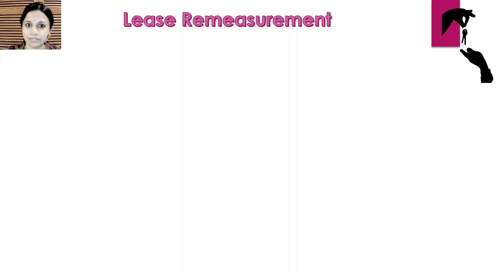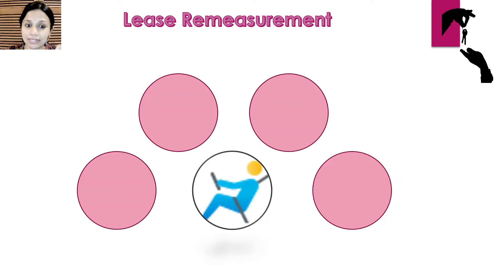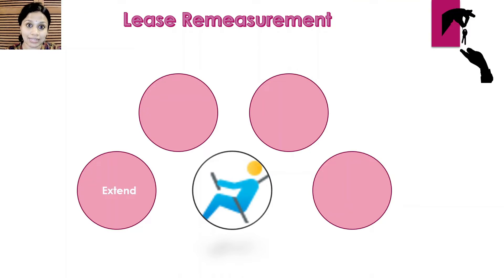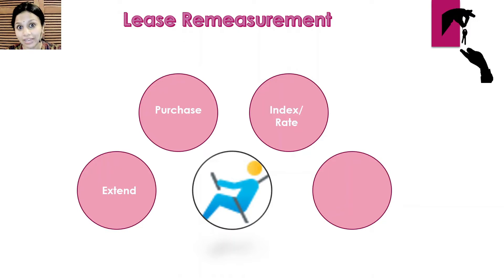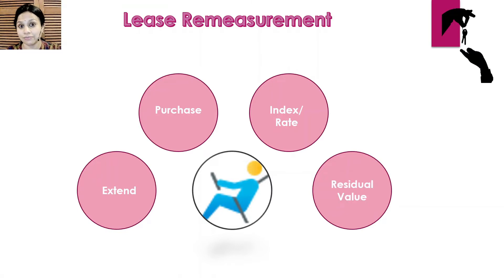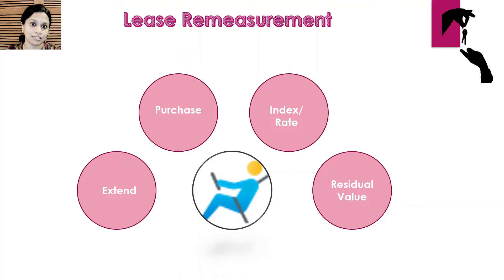So what is lease remeasurement? When a lessee takes an asset on lease and wants to record his lease liability, there are multiple assumptions that he makes. Some of the assumptions are whether he will exercise the option to extend the lease or not, whether he will finally purchase the underlying asset or not, the way in which the index or rate on which the variable payments depend will move, and the residual value — he estimates what it will be and may guarantee that value to the lessor.